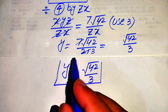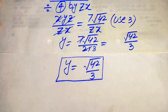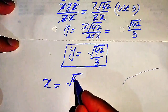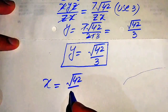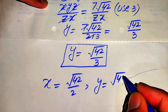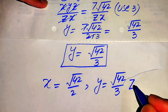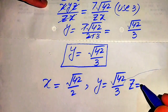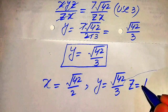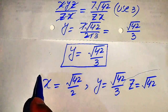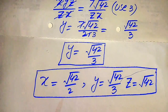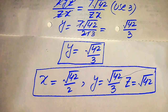Finally, the value of x equals the square root of 42 divided by 2, the value of y equals the square root of 42 divided by 3, and the value of z equals the square root of 42. These are the three values of x, y, and z, and this is our final answer. Thank you so much for watching this video, please subscribe to my channel for more exciting videos.